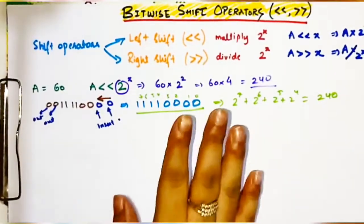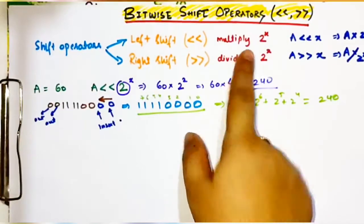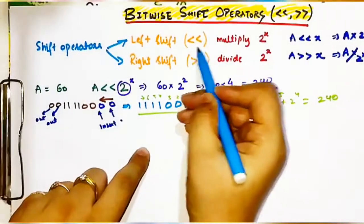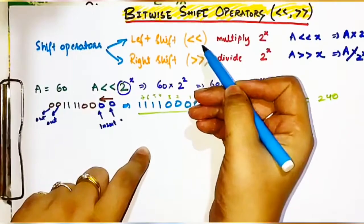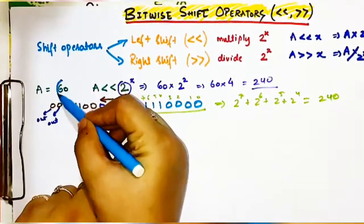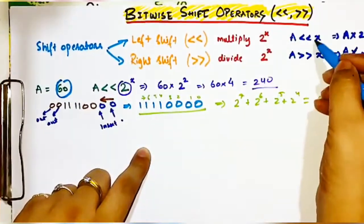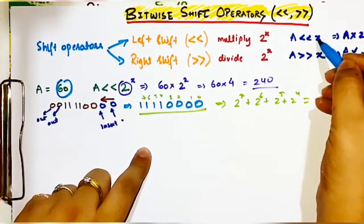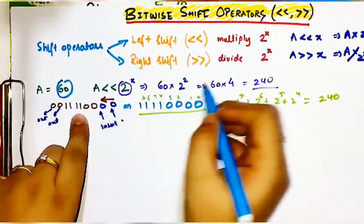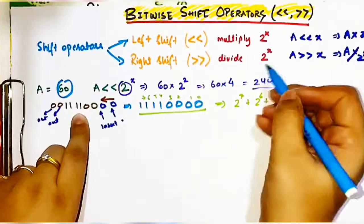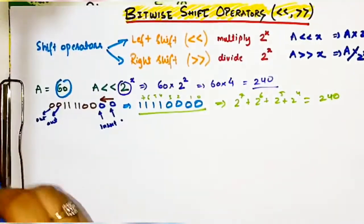The best trick for solving this type of question is: whenever you find a left shift operator, simply multiply the decimal value by 2 to the power of the shift amount. Whenever you find a right shift operator, divide by 2 to the power of the shift amount. Now let's see an example for the right shift operator.